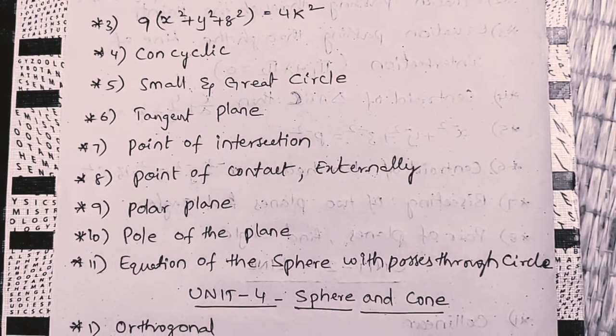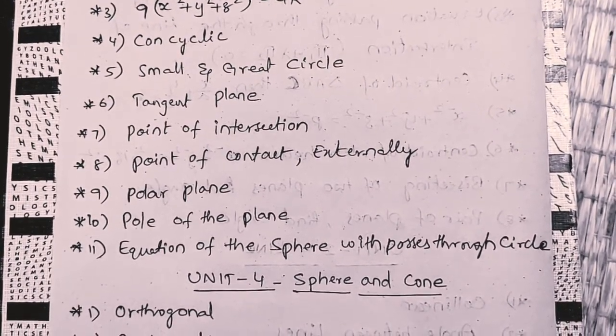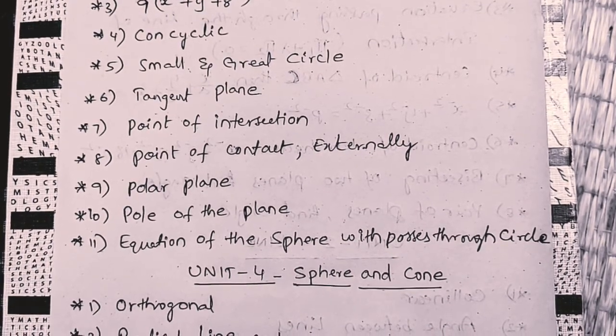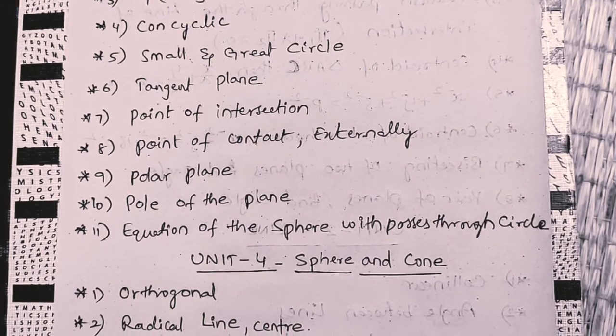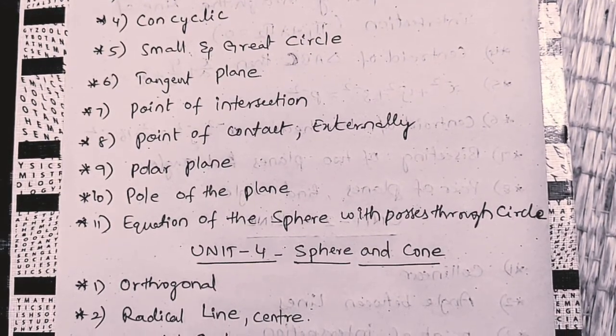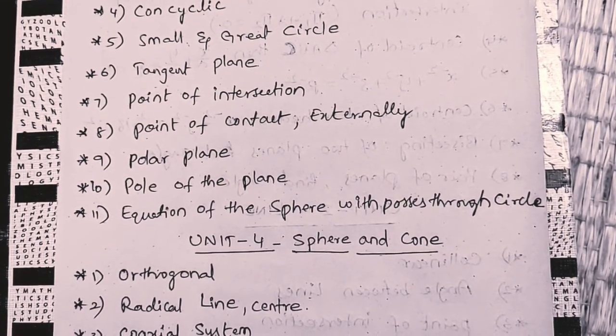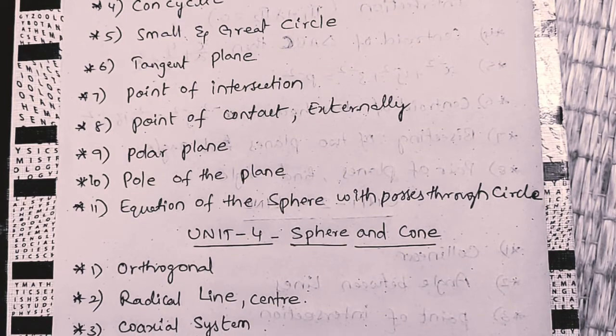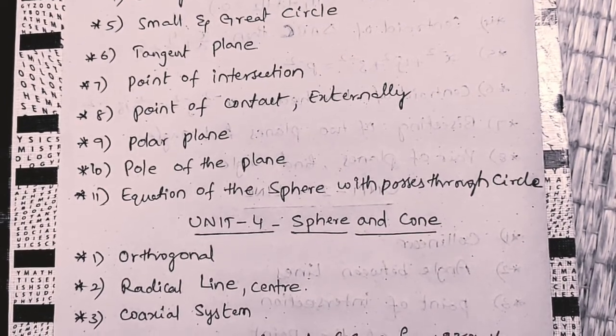Next, unit 4 is sphere and cone. The sphere and cone is split. 2 units are split. But in fourth unit, the sphere is going to be a cone. The number of questions is unit 5 and 4. So, let's see. First question, orthogonal, radical line, center.